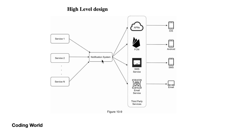The notification system gathers all contact information for the customer, builds the message, and sends it to APNS (Apple Push Notification Service), Firebase Cloud Messaging, SMS service, and email service. All messages in specific formats are built and sent to these services, and from those services they push the notification to your devices.